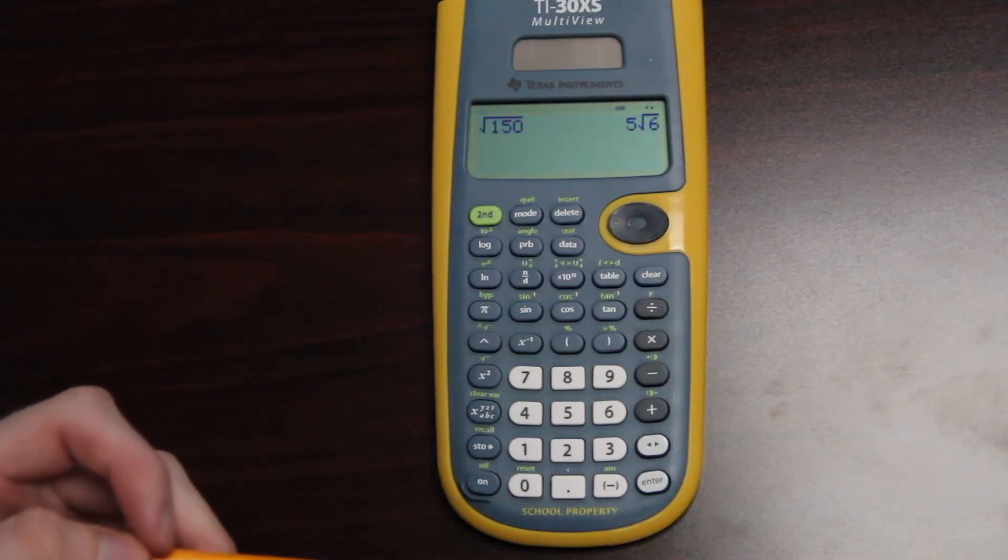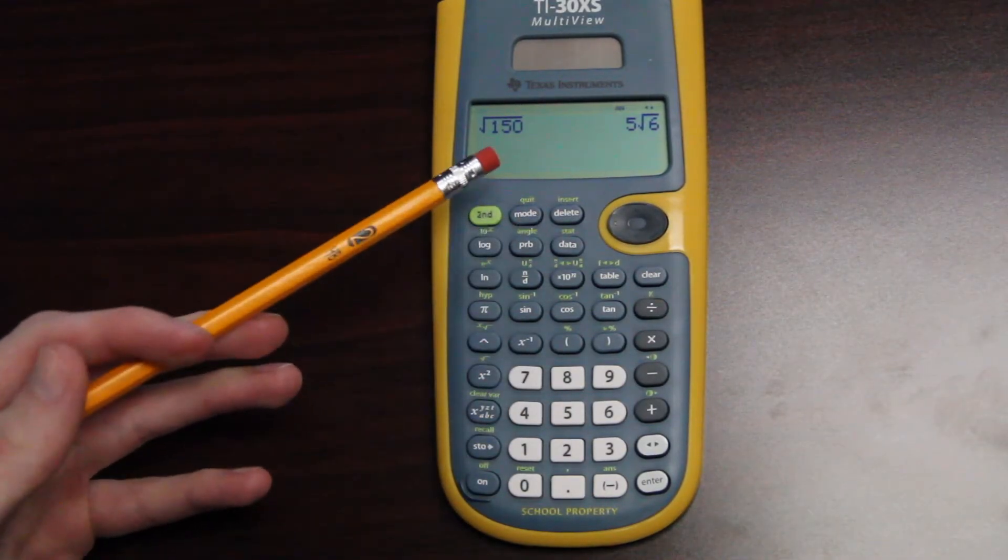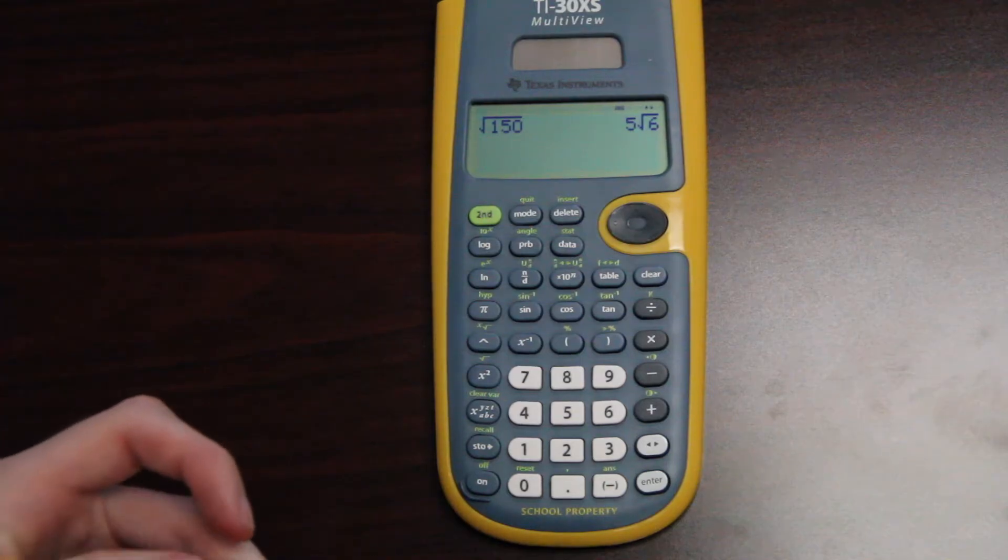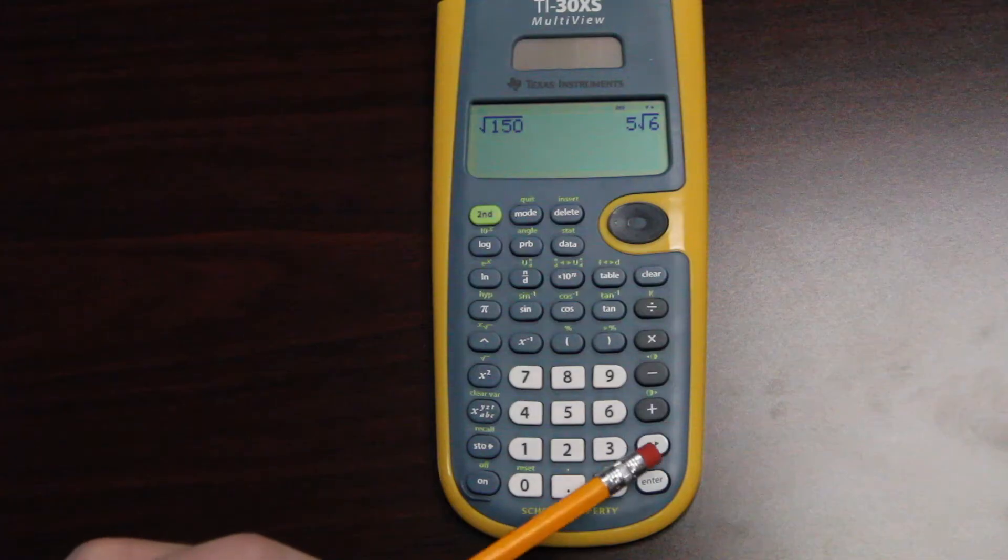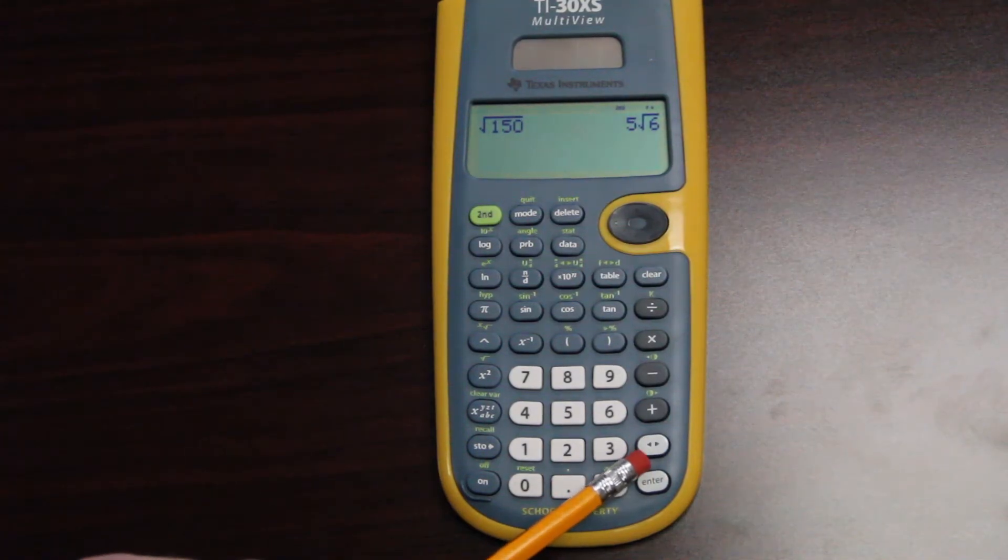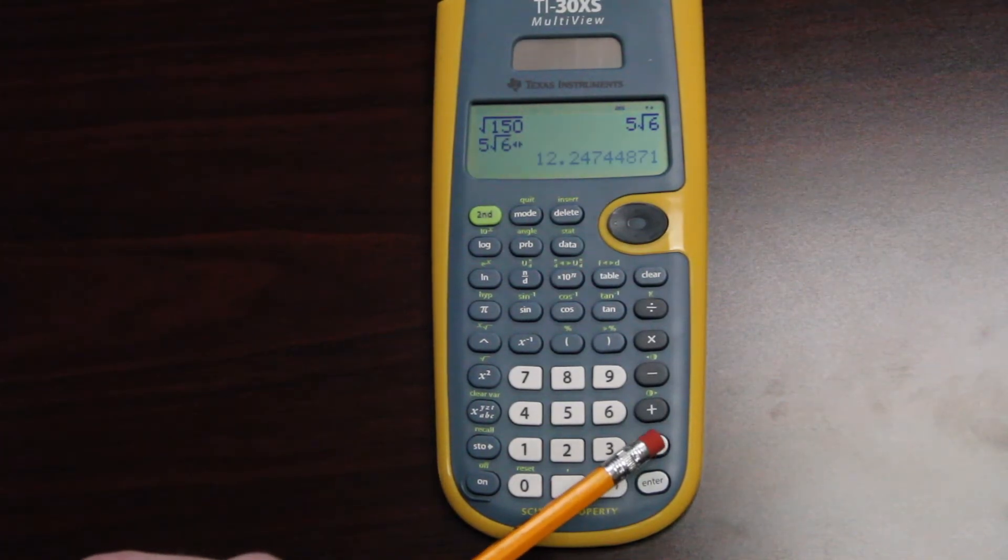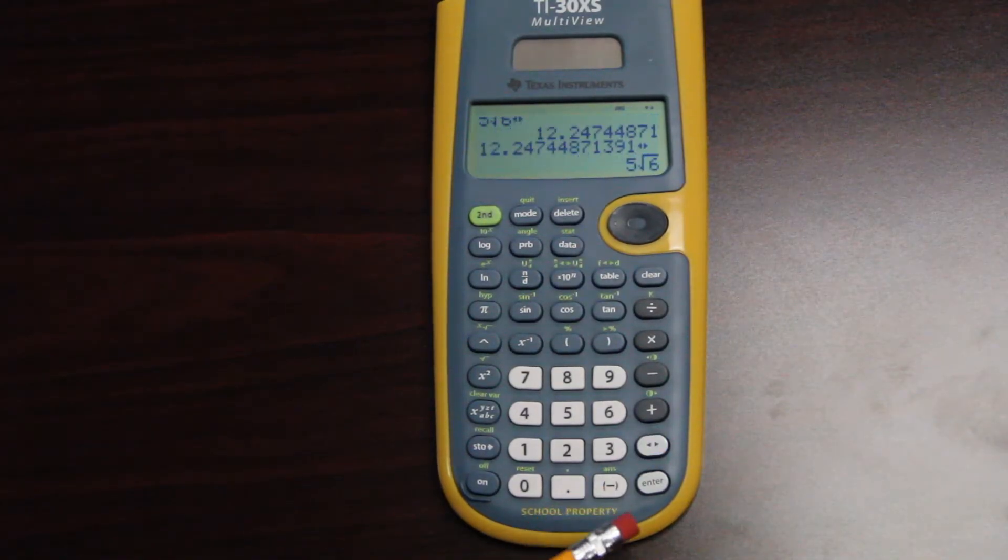So one of the things I want to talk about with this is you can change the format of this number if you want to. You can change it to a decimal or etc. The way that works is you push this arrow button in white, the left-right arrow. Whenever you do that, it'll change your value to a decimal and back to its exact form.